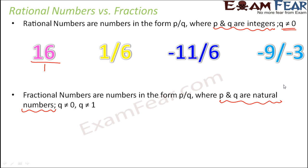So the negative numbers are not considered. And in this case there is one more additional criteria: q should not be equal to 0, which is there for rational numbers also, and q should not be equal to 1 as well.